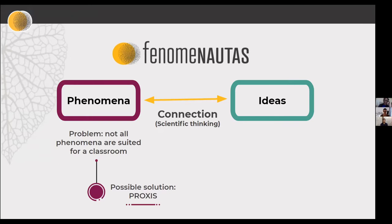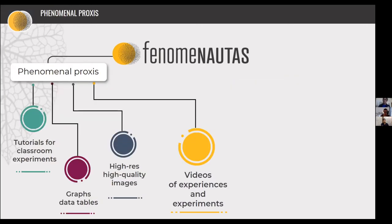Scientists use proxies all the time. For example, a paleontologist may not analyze a fossil herself — maybe she gets a camera lucida, a very precise drawing, or has a mold made and studies scientifically that cast. It's also famous that Watson and Crick resolved the DNA double helix structure with data that was produced by other people. So you don't have to have the data yourself in your hands — you can handle it in some other way. We've developed a lot of different phenomenal proxies: tutorials for classroom experiments.